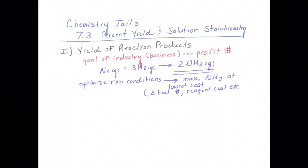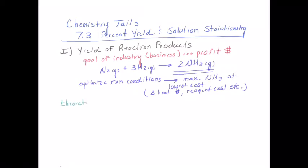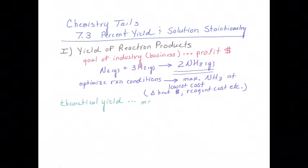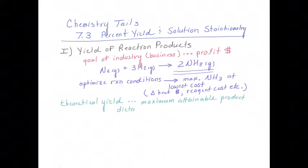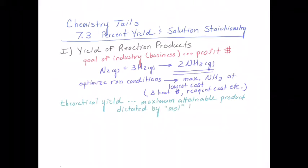If the reaction required heat to make it go, the cost is going to go up. And then there's the reagent costs — which one do you want to be your limiting reagent, which one do you want to be your excess reagent? Previously, we learned how to predict the theoretical yield of a reaction — that is the maximum amount attainable of a product. However much limiting reagent you have, that's going to dictate the theoretical yield: the maximum you can hope to obtain if everything goes perfectly, which it never does.